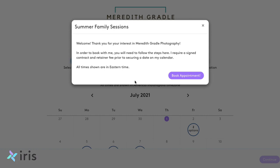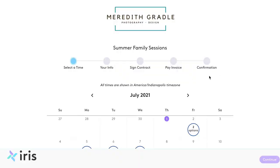This is a great way to explain what this is to your clients and give them more detailed information if needed. Once your client lands on this page, they'll go ahead and read what you've included and select 'Book Appointment.' You can then see the basic calendar — this is for my summer family sessions. What I really love about this design is that your clients can easily see the steps required to get to the confirmation.